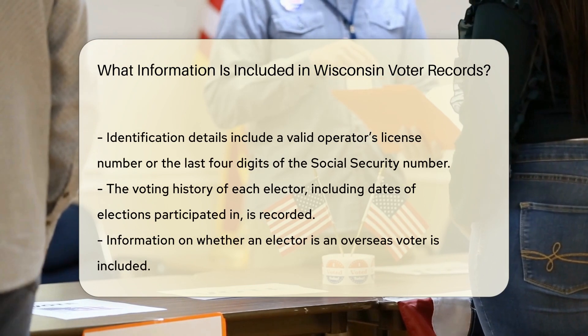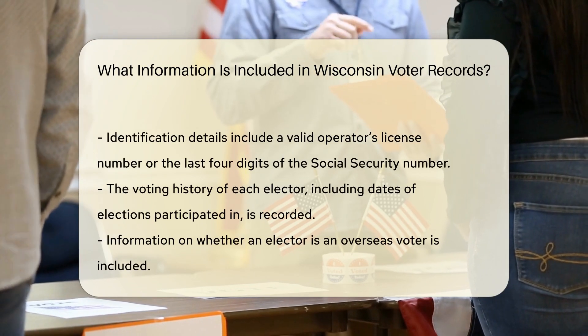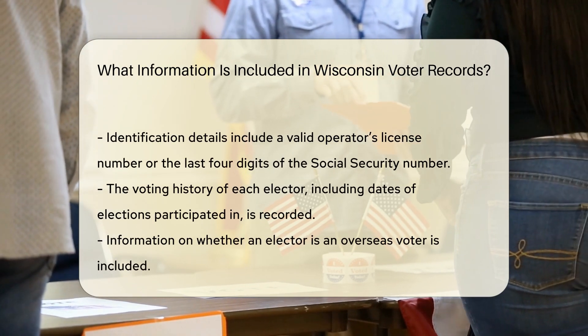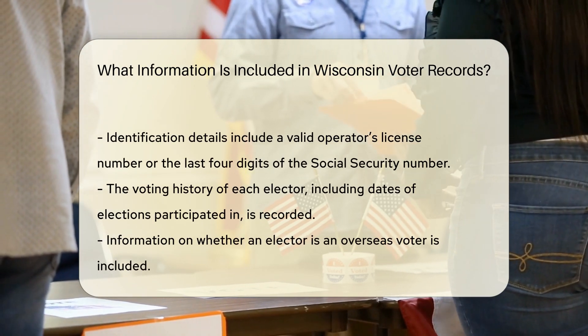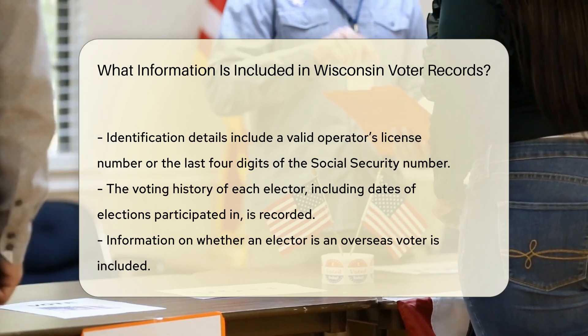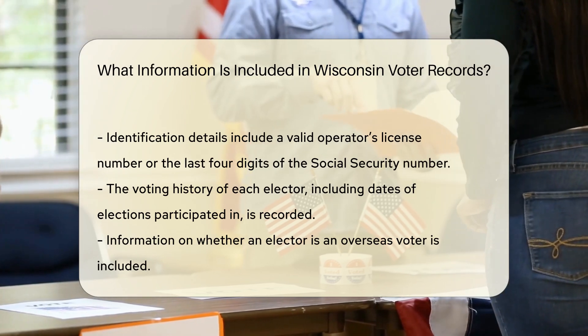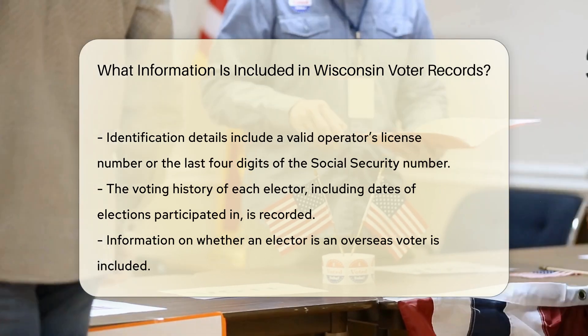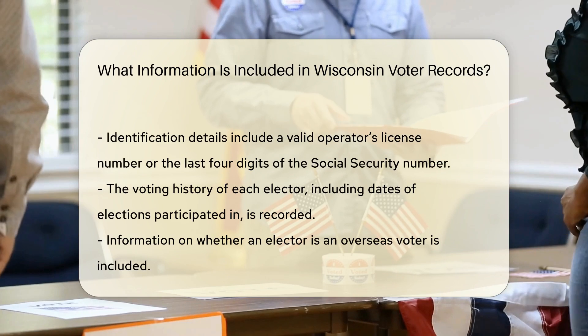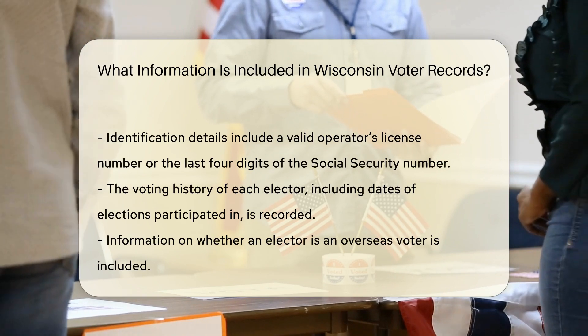Voting history: the list includes the date of any election in which the elector has voted. Overseas electors: information indicating whether the elector is an overseas elector is also included.